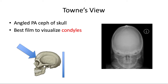The Towns view is another angled PA ceph of the skull, but coming from the opposite direction — the film is under the head and the source is from the front, directed at the condyles at about a 30-degree angle to the orbitomedial line. This is the best film to visualize the condyles and the neck of the mandible because it eliminates the superimposition of the mastoid and zygoma over the condylar neck that you'd often get in a straight PA projection, making interpretation of that region very difficult.